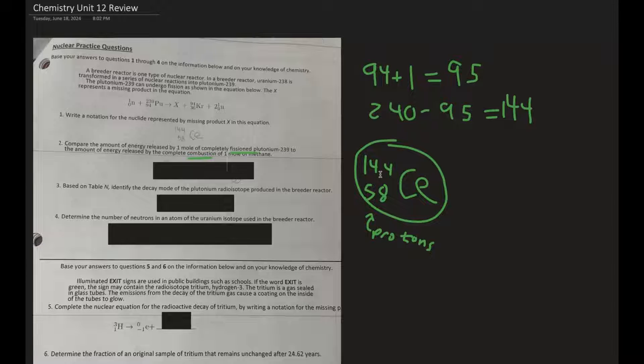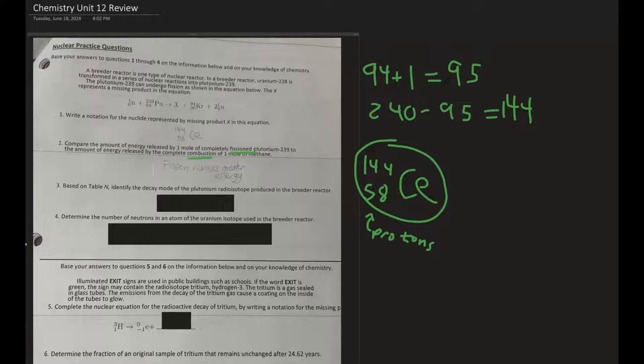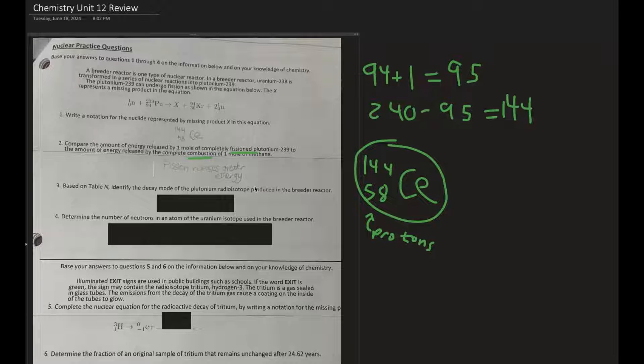Think like atomic bombs — a vast amount of energy, very unstable. So in our case, it would be the fission of plutonium. Fission does release greater amounts of energy.